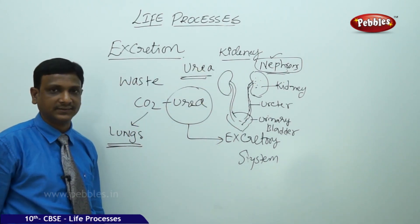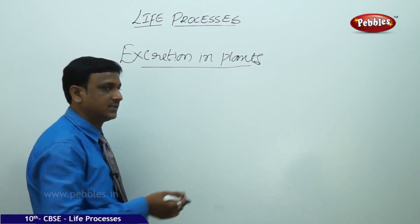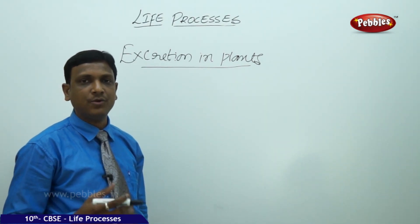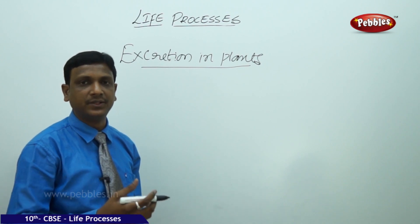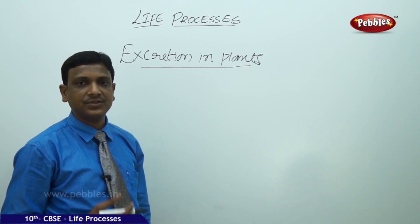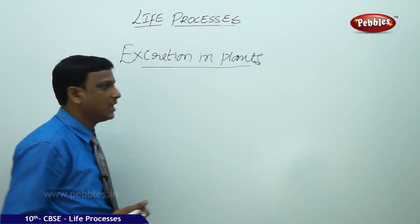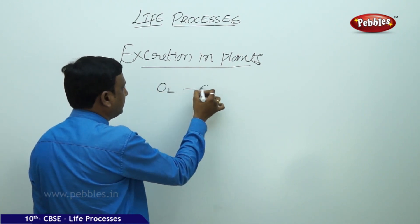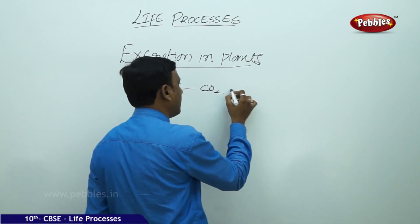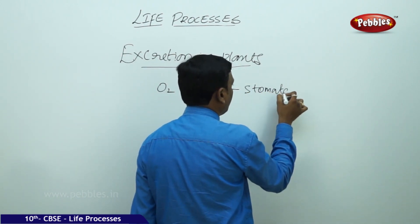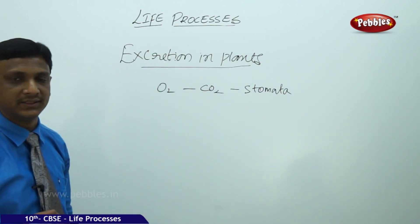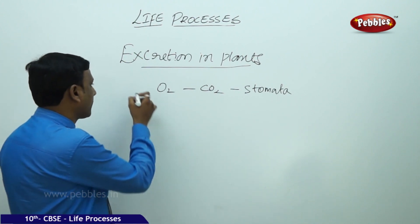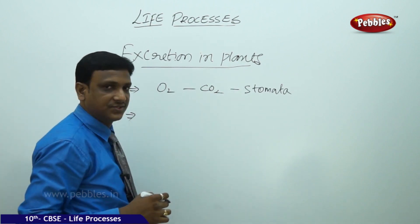Carbon dioxide is excreted by the lungs. Now let us see excretion in plants. Plants do not have any well-developed excretory system and they don't produce the amount of toxins as compared to other animals. But even then, they have some kind of waste materials. Oxygen and carbon dioxide can easily exchange with the air through stomata, so there is no problem exchanging gases. But what about the other wastes — metabolic waste?